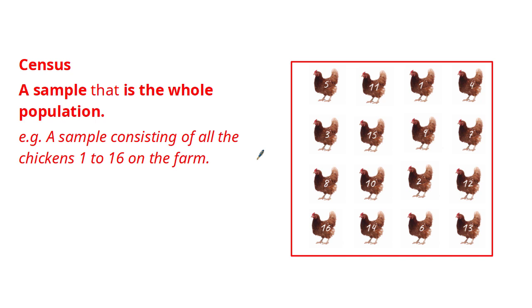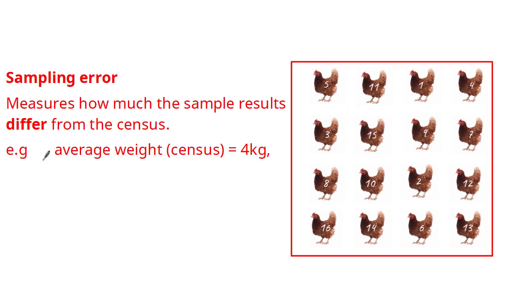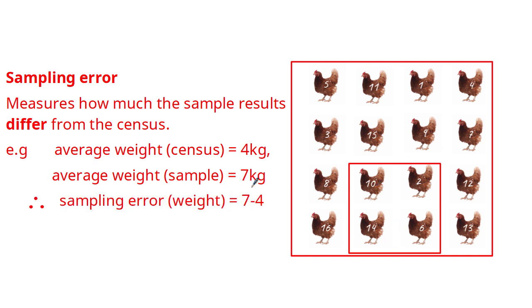So now we understand what a census and a sample is, let's now have a look at what a sampling error is. A sampling error measures how much the sample results differ from the census. For example, if we wanted to investigate the weight of all the chickens in this population, if we worked out the average weight of the census and found this to be 4 kg and then we worked out the average weight of a sample and found this to be equal to 7 kg, the sampling error of the weight would be equal to the difference between the two values: 7 minus 4, which is equal to 3 kg.